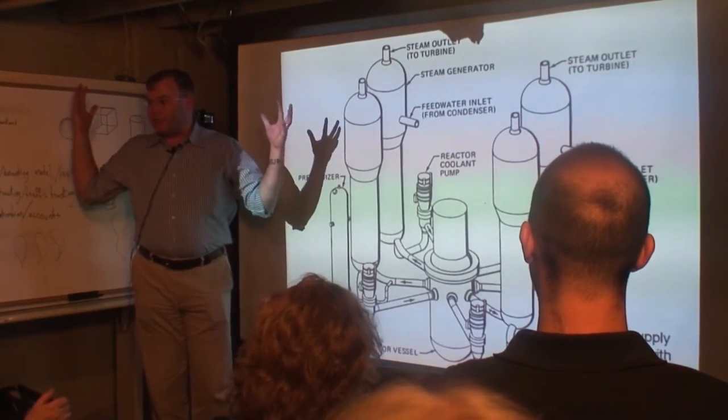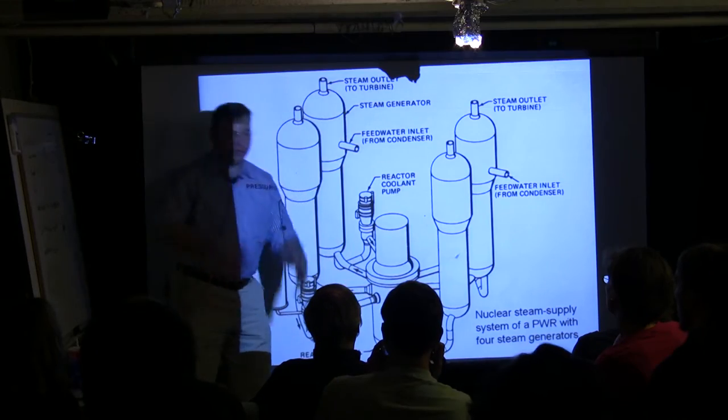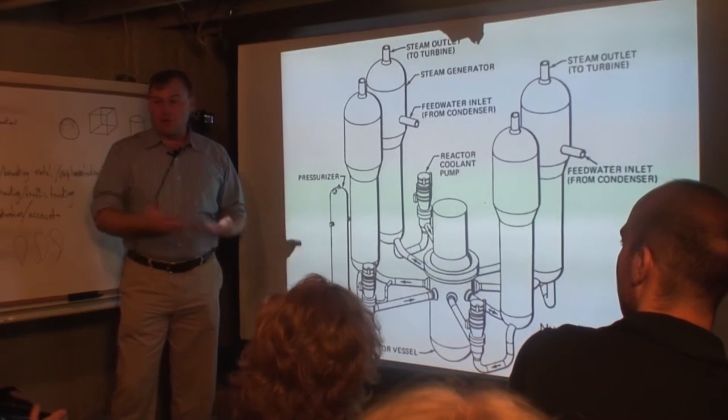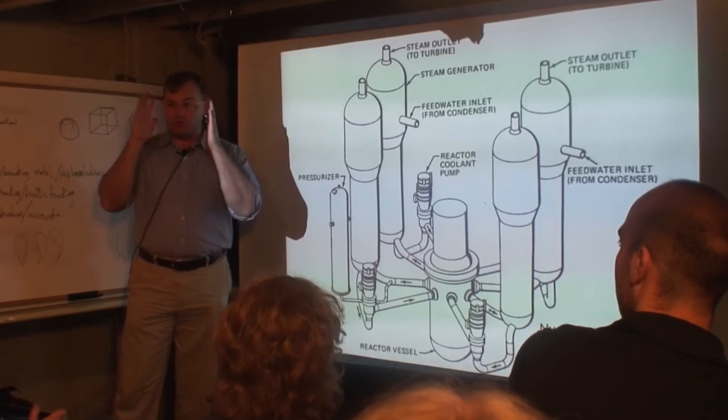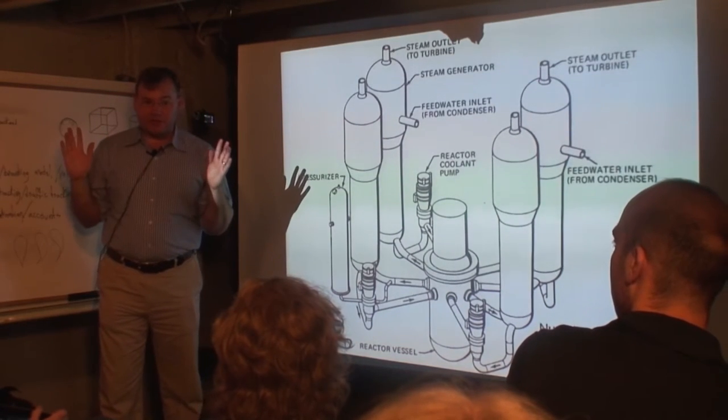The number one accident people worry about with this kind of reactor is what's called a double-ended pipe break. One of these eight pipes, for whatever reason, shears. All of a sudden, pressure is lost in the reactor. Steam doesn't take away heat nearly as well as liquid water does from a surface, so your fuel rods are not being cooled nearly as effectively as they were before.